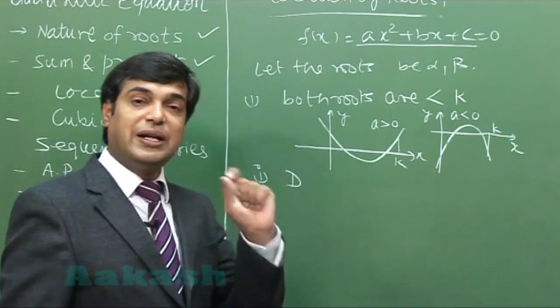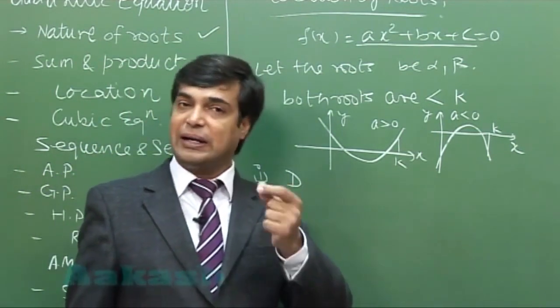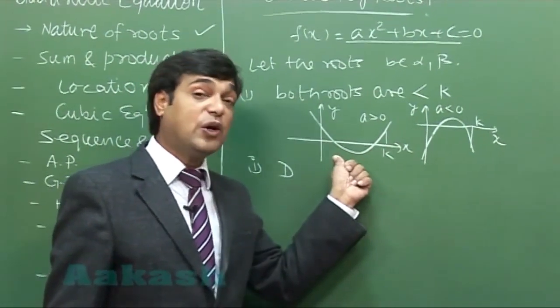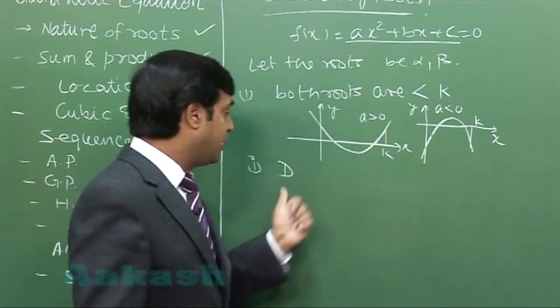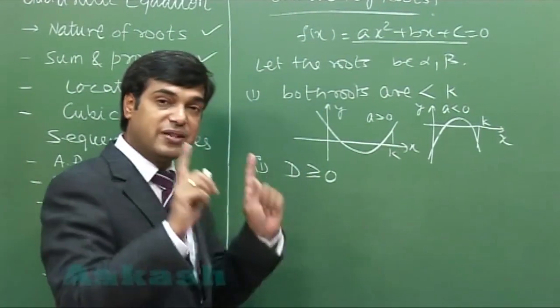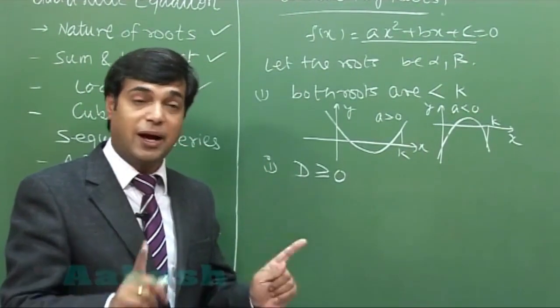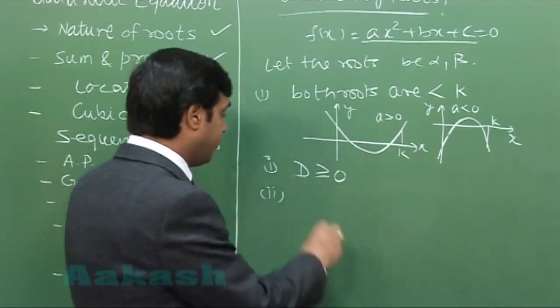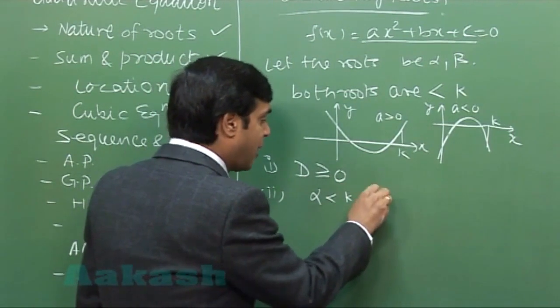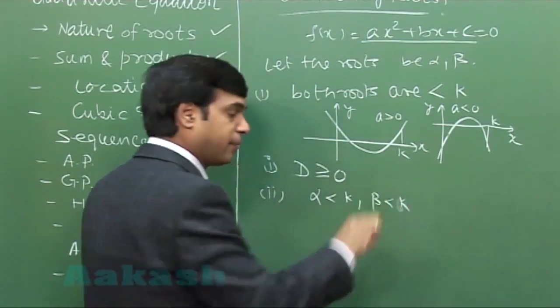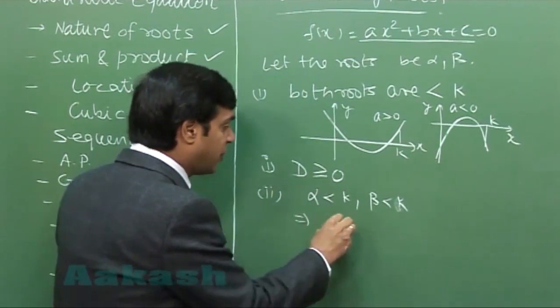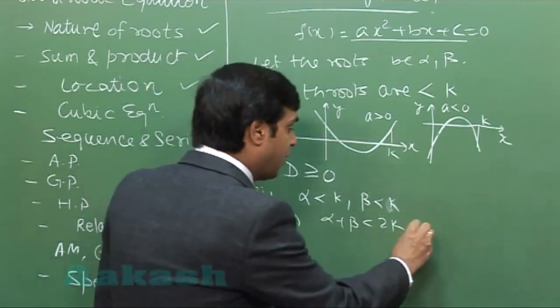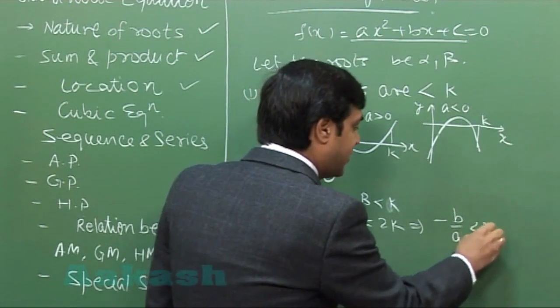Since roots exist, D has to be greater than 0 or greater than or equal to 0. Here I said both roots are less than k, meaning roots may be equal as well, so D ≥ 0. This is the first important condition. Second, both roots less than k means α < k and β < k, so the sum of roots α + β < 2k, which means -b/a < 2k.